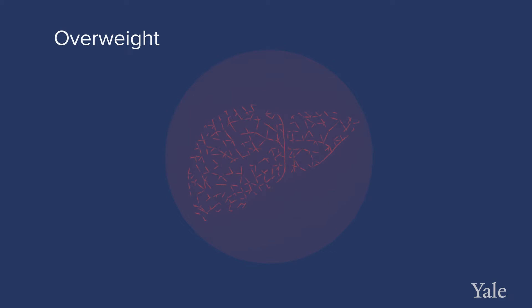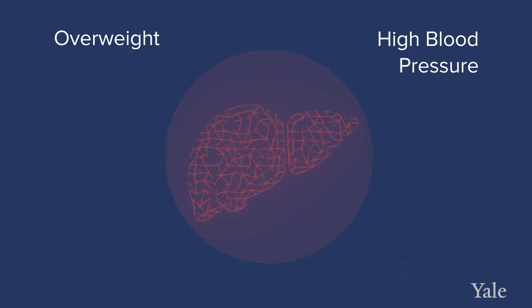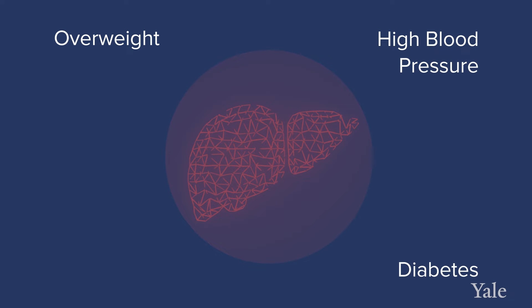For the majority of patients, the development of MASH appears to be very strongly linked to the development of metabolic syndrome. Patients who are overweight, have high blood pressure, diabetes, abnormal lipids, or tend to put weight centrally on their abdomen rather than distributing it across their body are predisposed to also storing fat inside of the liver.